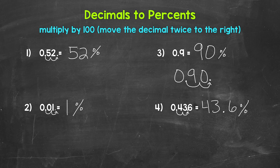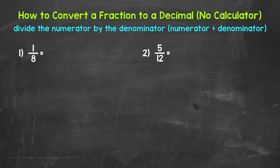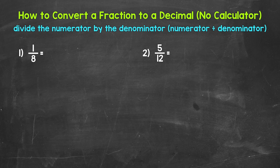Let's move on to fractions to decimals. We will go through four examples. For numbers one and two, we will work through them by hand without a calculator. Then numbers three and four we will work through by discussing what to plug into a calculator. Let's jump into number one, where we have one eighth. When we convert a fraction to a decimal, we divide the numerator — the top number — by the denominator, the bottom number. So we need to do one divided by eight.